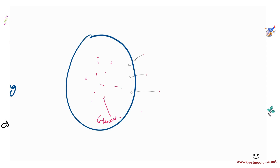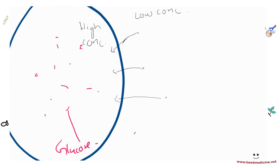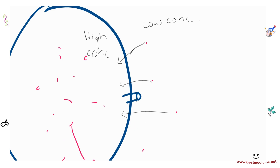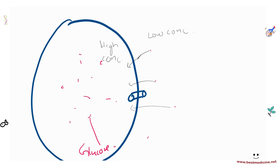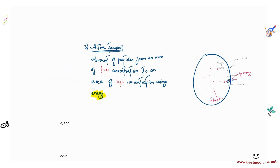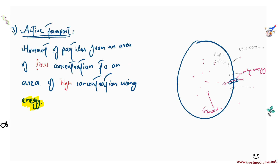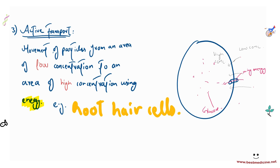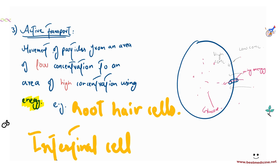For example, if a cell is rich in glucose on the inside but there is also some glucose outside, you cannot rely on diffusion to move glucose into the cell since inside already has high concentration. Special active transport proteins pull the glucose from low concentration outside to high concentration inside using energy. Examples of active transport occur in root hair cells and intestinal cells, for absorption of amino acids and glucose.